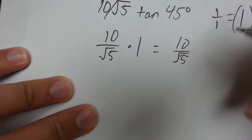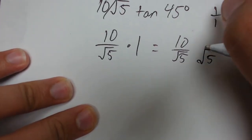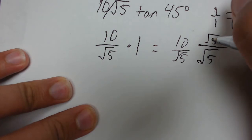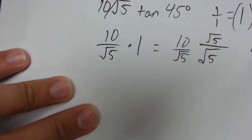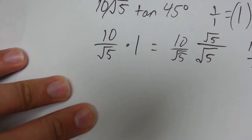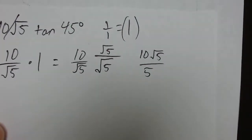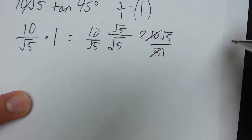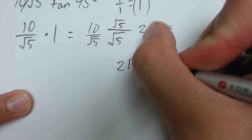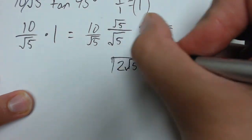From here, we have to rationalize the denominator. So we multiply it by root 5 over root 5. And then we get 10 root 5 over 5. The 5 and the 10 can cancel into 2 over 1. So the final answer just becomes 2 times square root of 5.